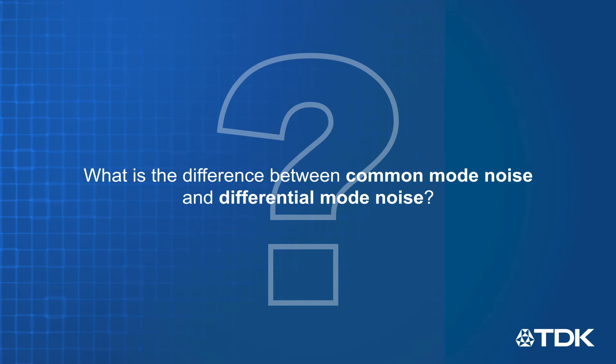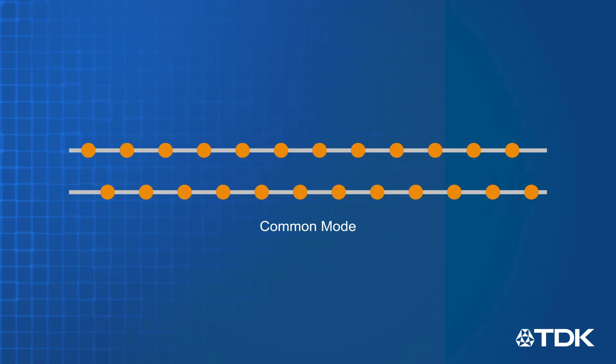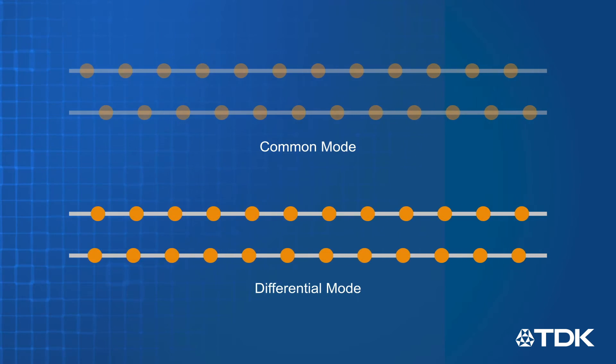What is the difference between common mode noise and differential mode noise? Common mode refers to noise currents that flow in the same direction in a pair of conductors, while differential mode, or normal mode, refers to noise currents that flow in opposite directions in a pair of conductors.